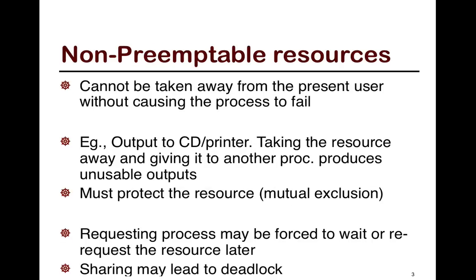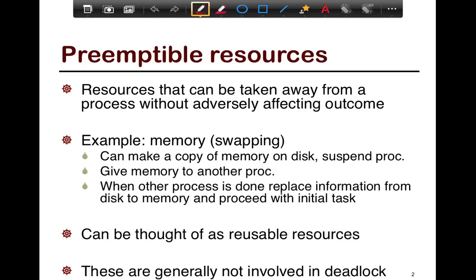First we'll start with preemptible resources. Preemptible resources are resources that can be taken away from a process. If a process has asked for some resource and is holding on to it, you can take it back without affecting the process — that's known as a preemptible resource. An example of this is memory swapping: you can lend out some memory to a process, take away that memory, make a copy of it on disk, give the physical memory to another process, and when done, give the memory back to the original process. You can also think of them as reusable resources.